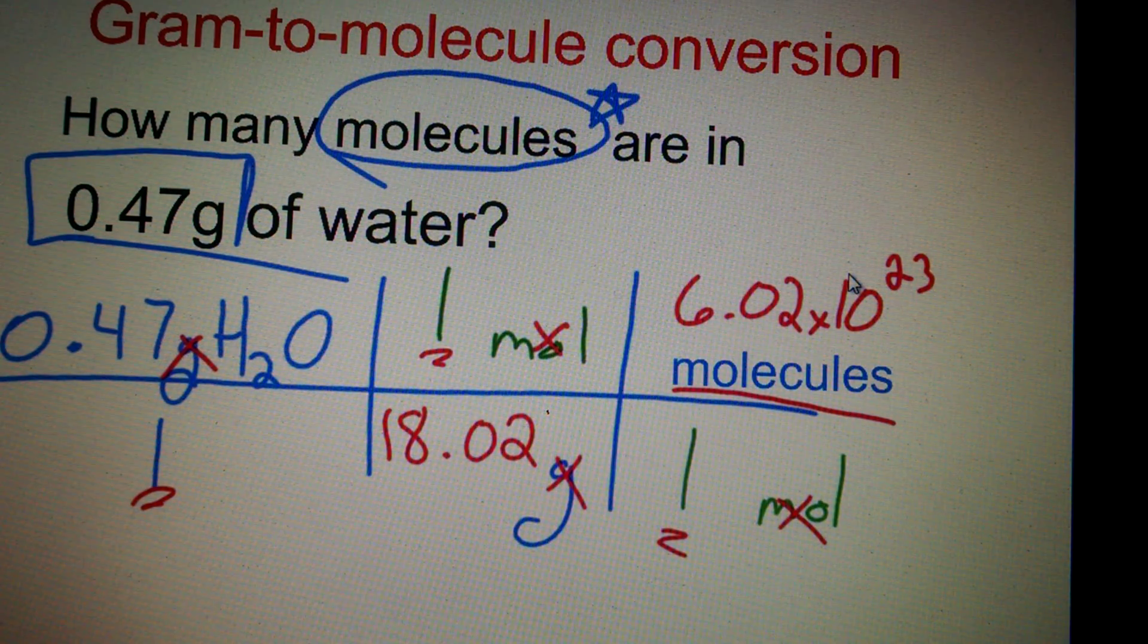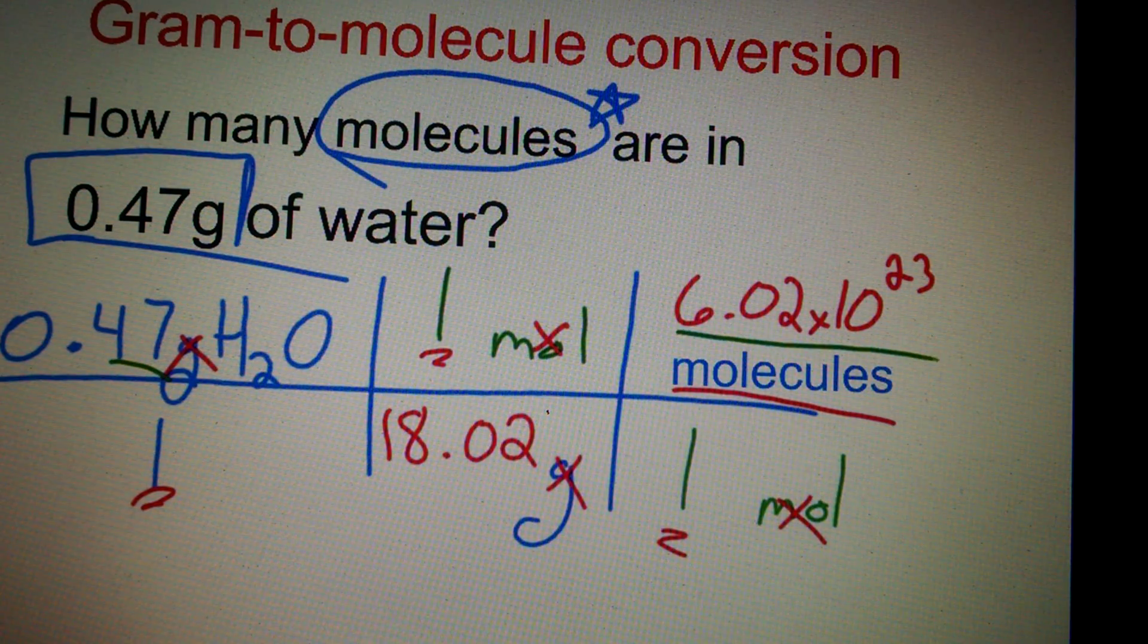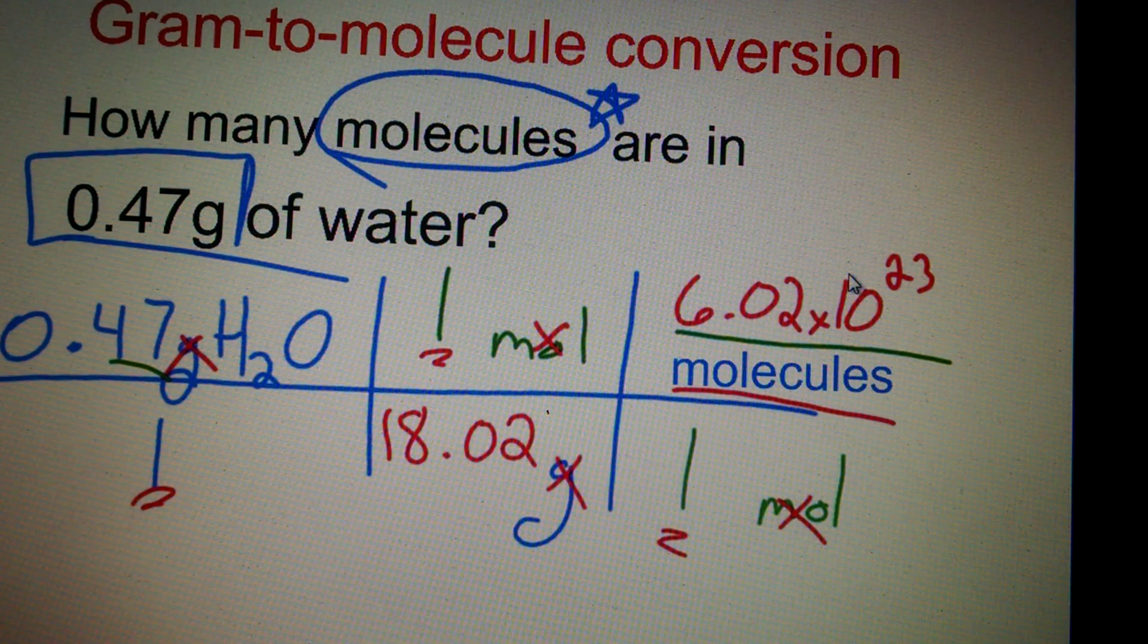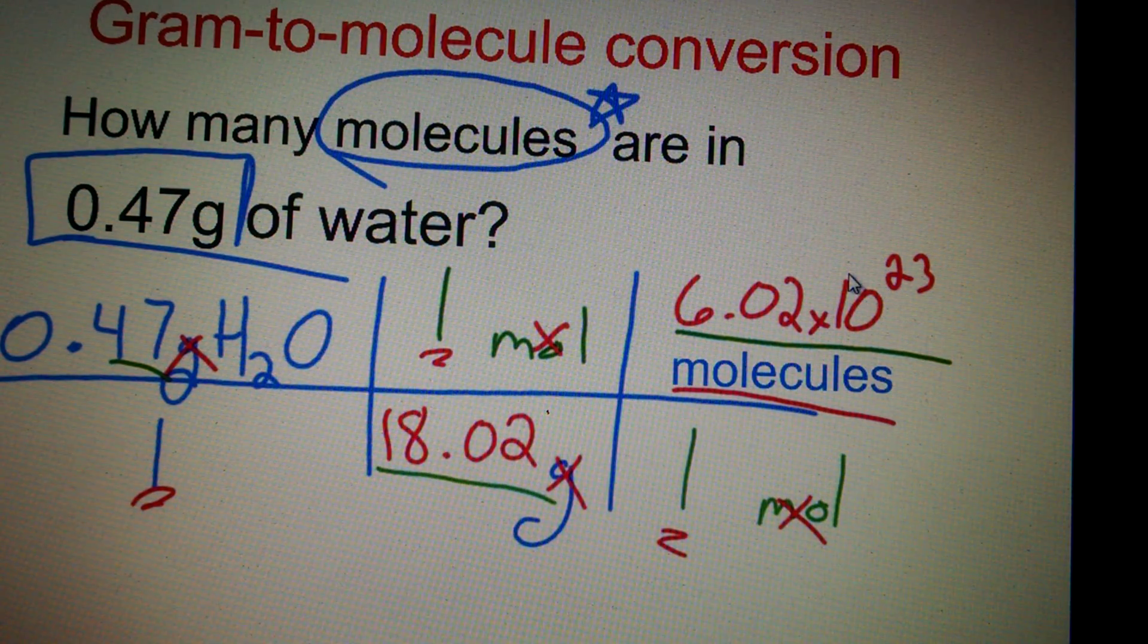So now we just have to calculate. So we're going to take the 0.47. We're going to multiply it by 6.02 times 10 to the 23rd. Then we're going to divide it by the molar mass of water, which is 18.02.